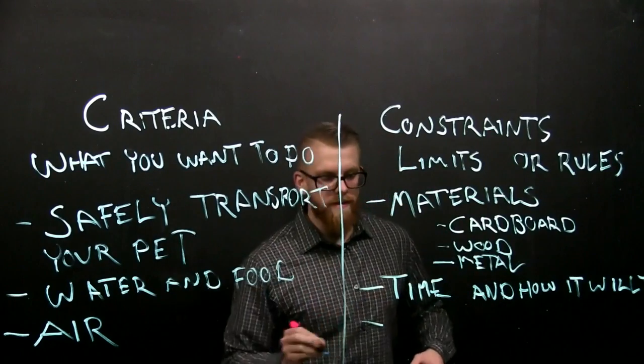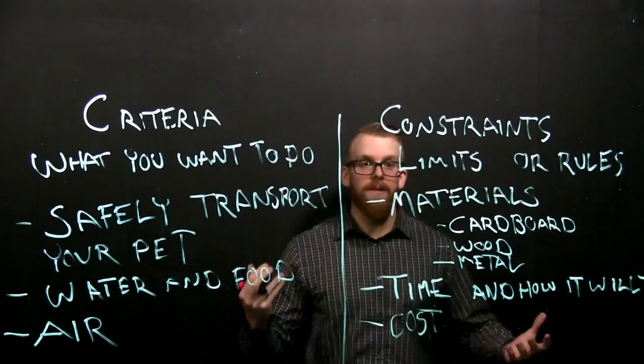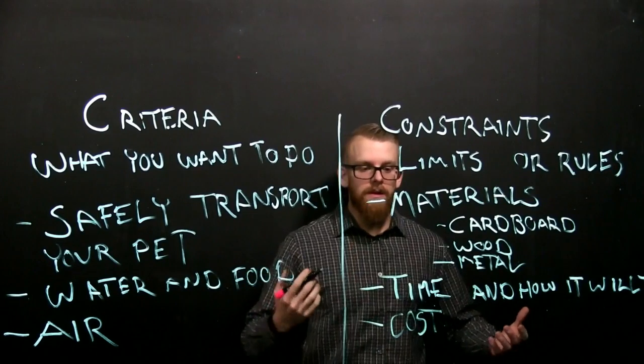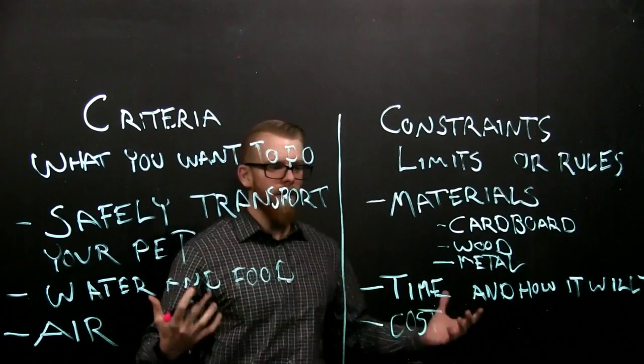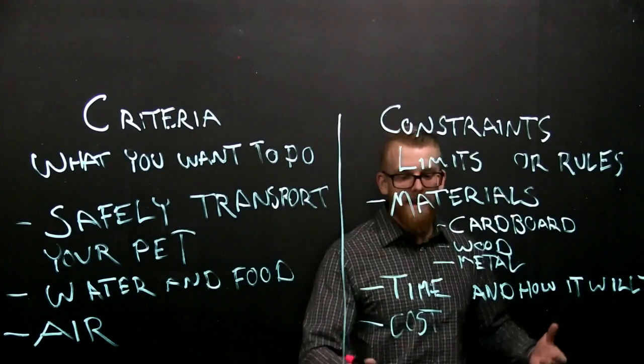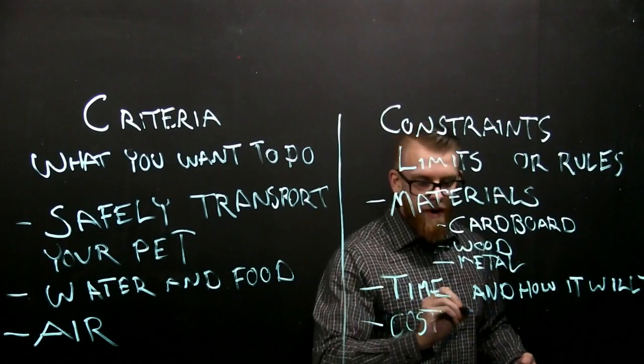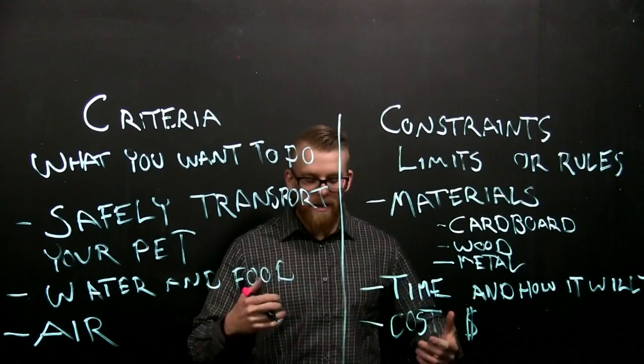Another one might be cost. You need to know how much it's going to cost to build this. You don't want to start getting unrealistic and start saying, I'm going to make my pet carrier out of gold. Ridiculous. You're not going to spend that much to bring your pet to the vet. So, you want to think about how much money you're going to spend on creating this.